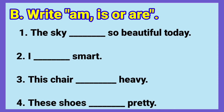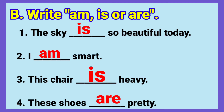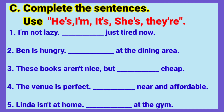Here are the correct answers for Exercise B. Number one: The sky is so beautiful today. Number two: I am smart. Number three: This chair is heavy. Number four: These shoes are pretty. Exercise C: Complete the sentences using he's, I'm, it's, she's, there, or they're.